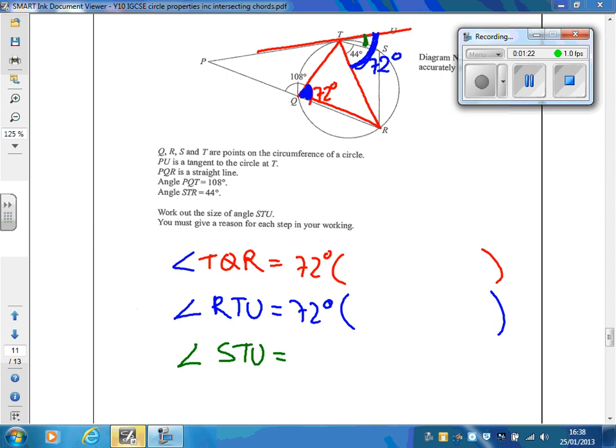This smaller part here is 44 degrees, which means that the one that we want must just be 72 minus 44. You don't really need to give a reason—it's just 72 take away 44, which comes out as 28 degrees.